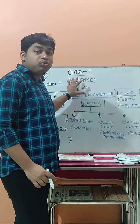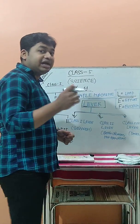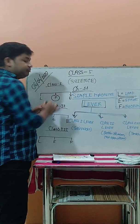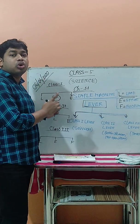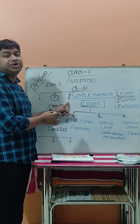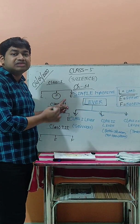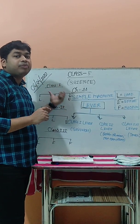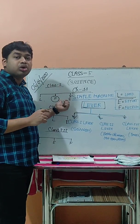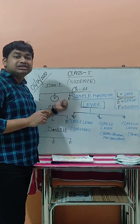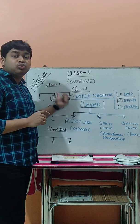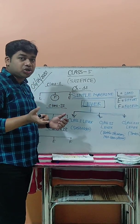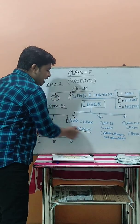First is the Class 1 lever. In this type of lever, the fulcrum is located in the middle — between the load and the effort. This type of lever is known as a Class 1 lever. Examples of the Class 1 lever are scissors and the seesaw.